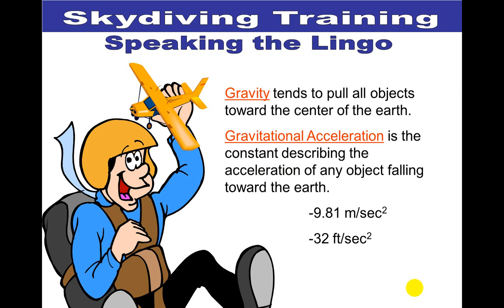Gravity pulls all objects toward the center of the earth, so we have a constant for the acceleration of gravity describing any object falling toward the earth. The international standard unit is negative 9.81 meters per second squared, or meters per second per second. The US customary unit is negative 32 feet per second squared, or feet per second per second. The negatives represent motion going down toward the earth. Write these two constants in your engineering notebook — they will be used throughout this unit.